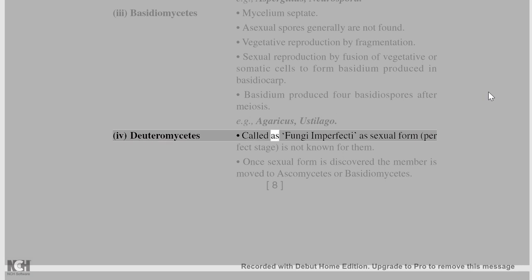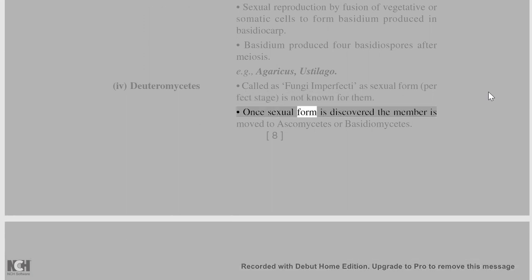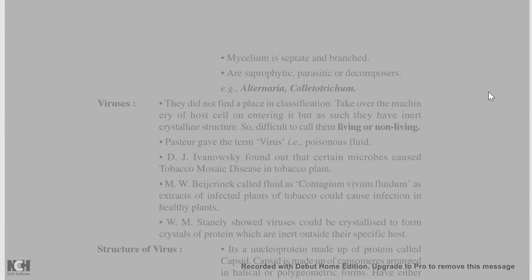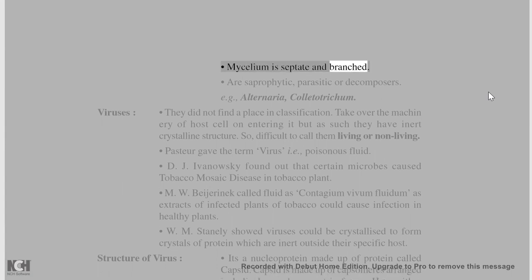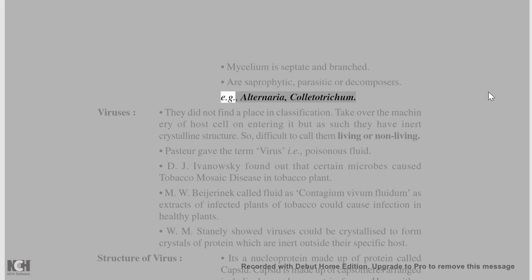Deuteromycetes are called fungi imperfecti as their sexual form (perfect stage) is not known. Once the sexual form is discovered, the member is moved to Ascomycetes or Basidiomycetes. Mycelium is septate and branched; they are saprophytic, parasitic, or decomposers, e.g., Alternaria, Colletotrichum.